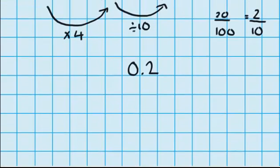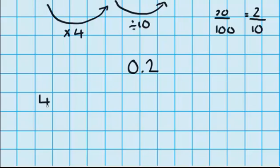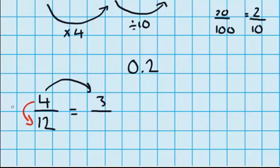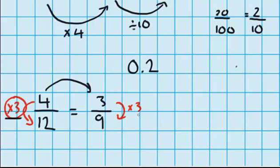This within strategy is also good for questions like this. Let's say you had four twelfths and you needed to change that into an equivalent fraction where you're already given the numerator as three, and you're trying to work out what the denominator is. Looking at that, it's very hard to change the four into the three, so I'm going to use my within strategy. I look at the pattern between the numerator and the denominator: four times three equals twelve. So now I need to see this same pattern over here — if I times the numerator three by three, I get nine. So four twelfths is the same as three ninths. Here we multiplied by three, and over here we multiplied by three.